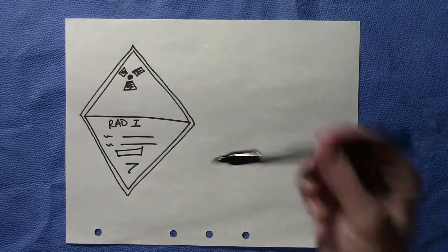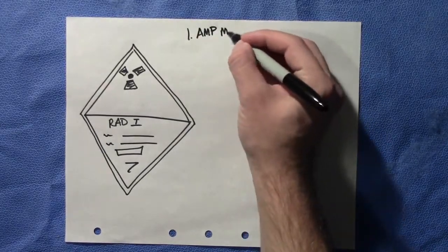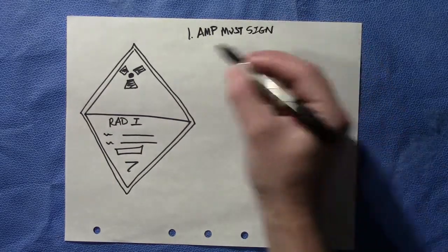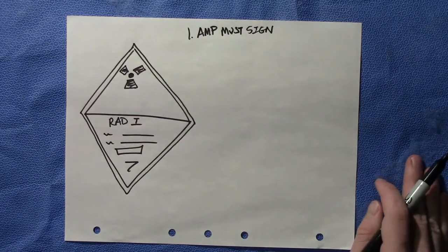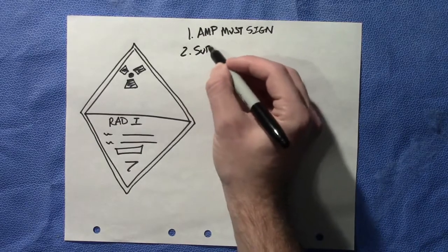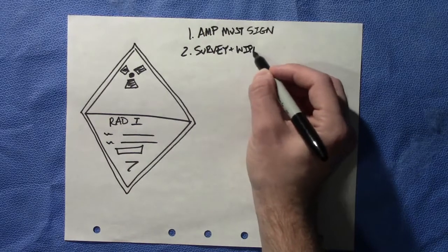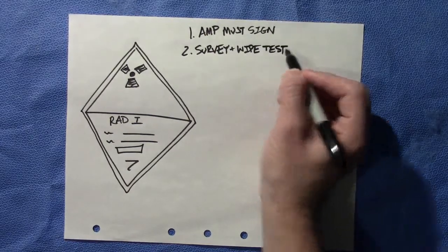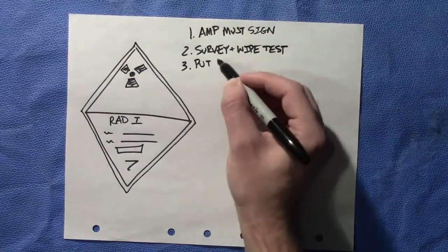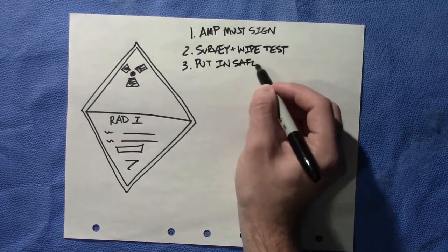First, an AMP must sign for it. This is a general rule and an AMP should know the rules to become an authorized medical physicist. Two, you need to do a survey and a wipe test of that package within three hours of receiving it. And third, you simply want to put this package in a safe place.